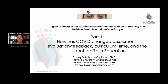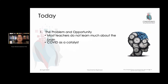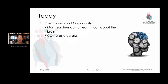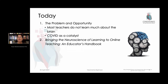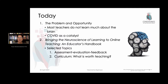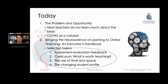Now that we've framed this big problem and looked at the structure of the book and where the information comes from, we promised a big look at four selected topics today: assessment, evaluation and feedback; curriculum; the use of time and space; and the changing student profile. We're going to have a few slides on each of these points. We want to plant some seeds about each of these ideas, and we'd like you to jot down some thoughts or questions or comments related to each piece and send them in so that we can focus on that in our live encounter.